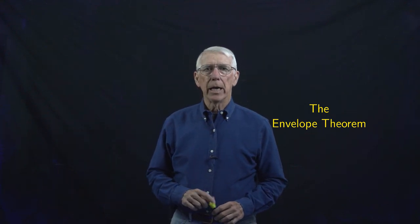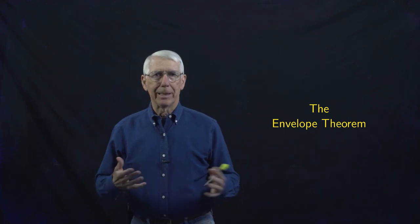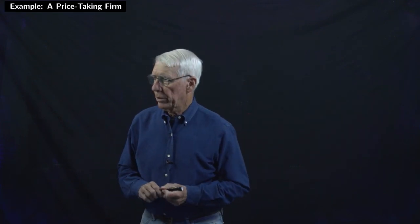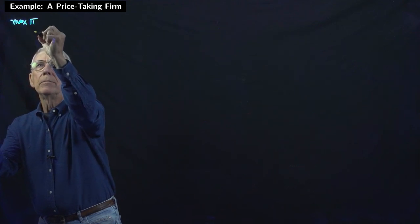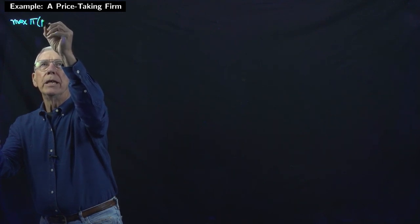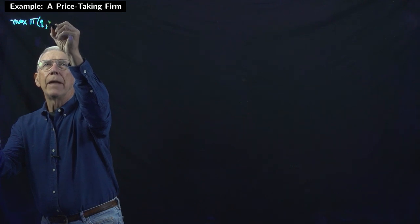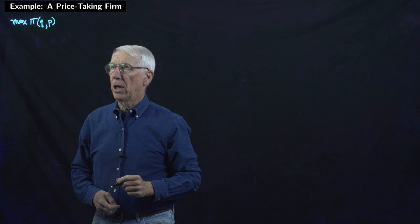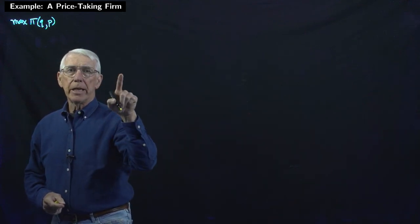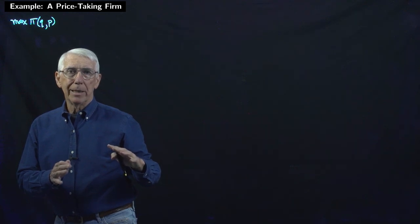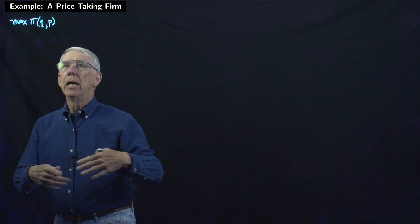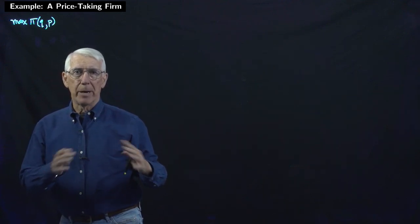Let's start right in with a simple example from undergraduate economics. We're going to look at a price-taking firm. We have a firm that is going to maximize its profit. Profit depends on the quantity that the firm produces and wants to sell, and also on the market price. This is a price-taking firm, which means that by selling more or less quantity, it will not have any effect on the price — it takes the price as parametric.